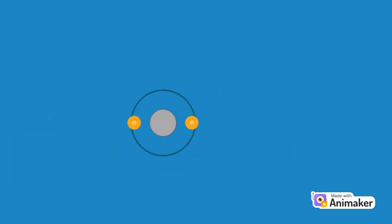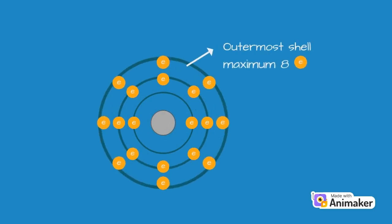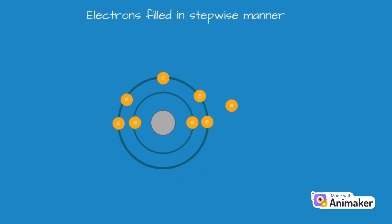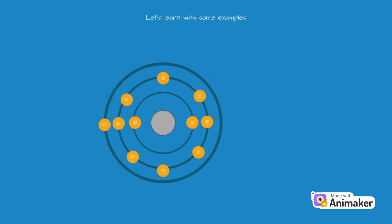They also proposed that the maximum number of electrons that can be accommodated on the outermost shell is 8. Moreover, electrons are filled in a stepwise manner, which means electrons cannot be accommodated in a given shell unless the inner shells are completely filled. We will now learn these rules with some examples.